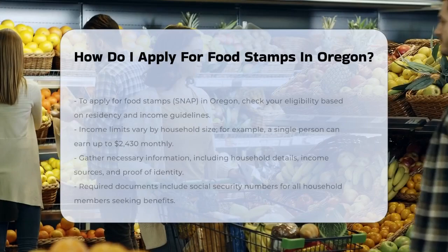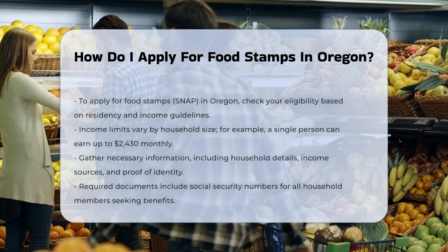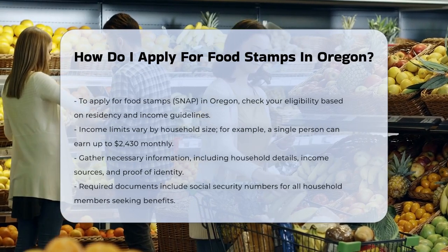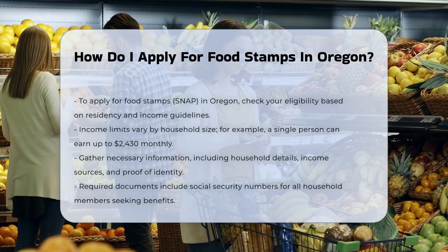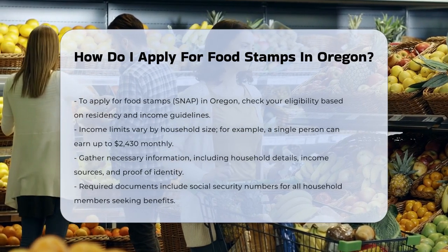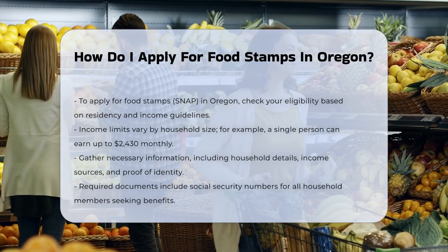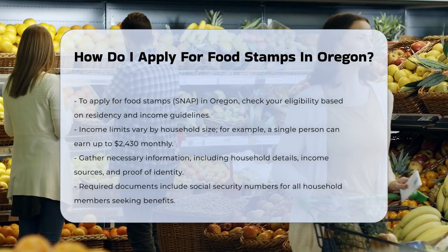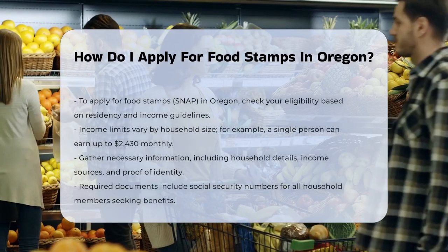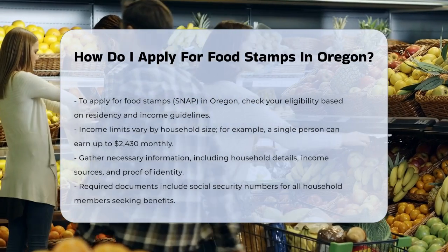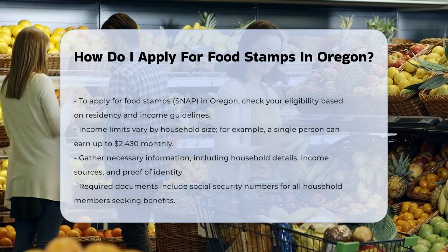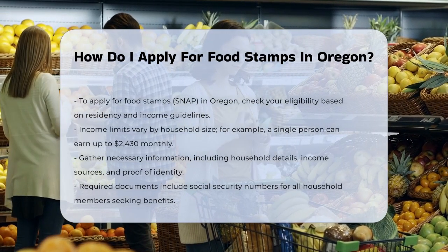To apply for food stamps, also known as the Supplemental Nutrition Assistance Program (SNAP) in Oregon, you have several convenient options. First, determine eligibility: you need to check if you are eligible for SNAP benefits. You must be a resident of Oregon and meet specific income guidelines, which vary based on the number of people in your household. For example, a household of one can earn up to $2,430 per month, while a household of eight can earn up to $8,420 per month.